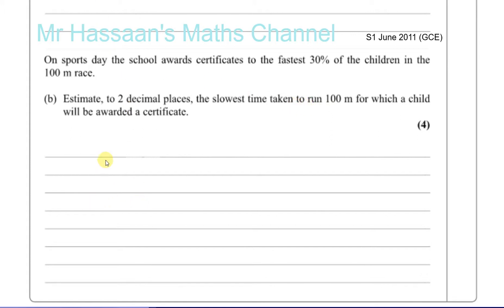So basically the fastest children are going to be the ones whose time is, of course, below the mean. The fastest 30% are going to be the ones whose times are below the mean. So we have to try to find out what this time is.